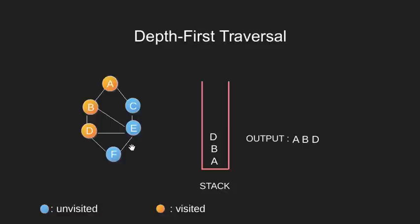Vertex E and F are the nodes that satisfy our given criteria. We choose vertex E, push it onto our stack, print it and also visit it.